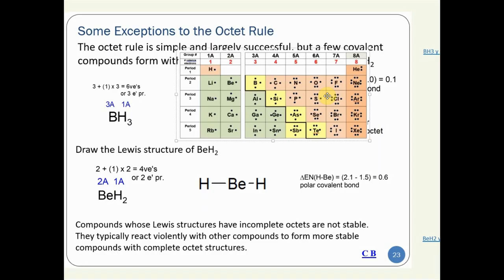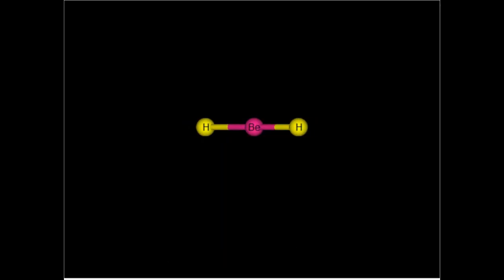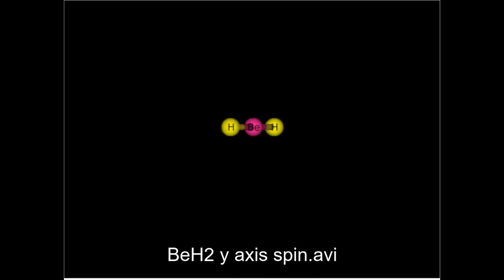Another exception occurs with beryllium compounds. Beryllium is a metal with EN = 1.5. Combined with a reactive nonmetal like fluorine or oxygen it forms ionic compounds, but combined with hydrogen (low EN), the ΔEN is insufficient for ionic bonding, so it is polar covalent with an incomplete octet. In beryllium hydride (BeH2), there are only four valence electrons (two pairs) — a linear structure with only two covalent bonds and just four electrons in its valence shell.